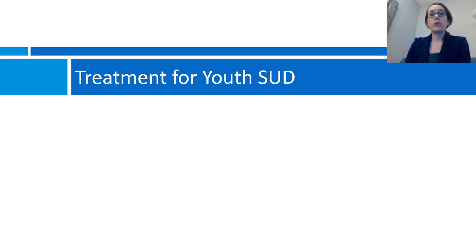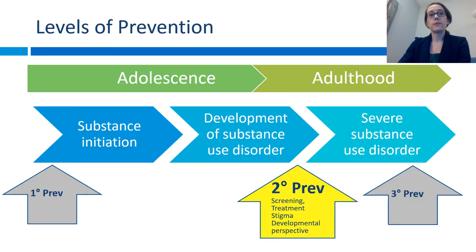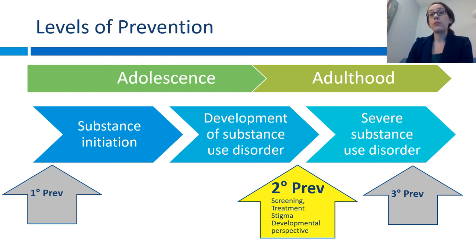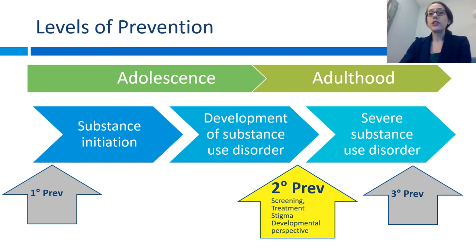Now I'll talk about what treatment is available for youth with substance use disorders. I often frame these thoughts around the levels of prevention, with progression from substance initiation in adolescence through the development of substance use disorder and onto severe substance use disorder in adulthood. Primary prevention works before individuals even begin to use substances. Most of my work is focused on secondary prevention — once adolescents are already using, what can we do to prevent them from reaching that severe stage in adulthood? This includes screening, treatment, working on stigma, and keeping a developmental perspective. Tertiary prevention at the other end focuses on harm reduction for individuals with the most severe addiction, and this also applies to adolescents.